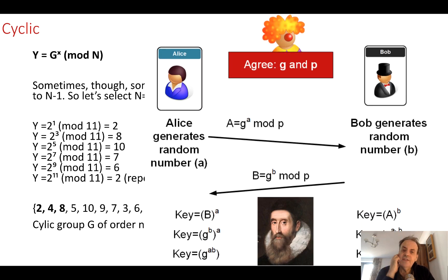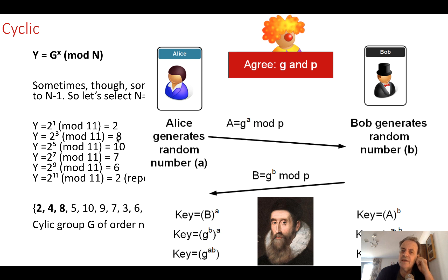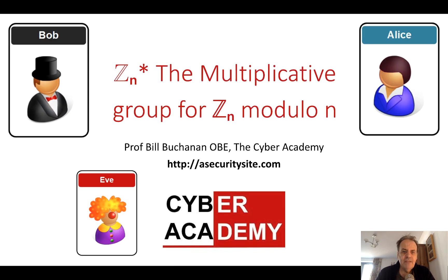An example of this is the Diffie-Hellman method. Alice raises g to the power of a (a random private value), and Bob raises g to the power of b, all taken mod p — the prime number. Picking the right g value gives us the cyclic group we need. In Diffie-Hellman, we pick a prime number and a generator g — typically 2 or 3 — and that outlines the multiplicative group Zn* modulo n.